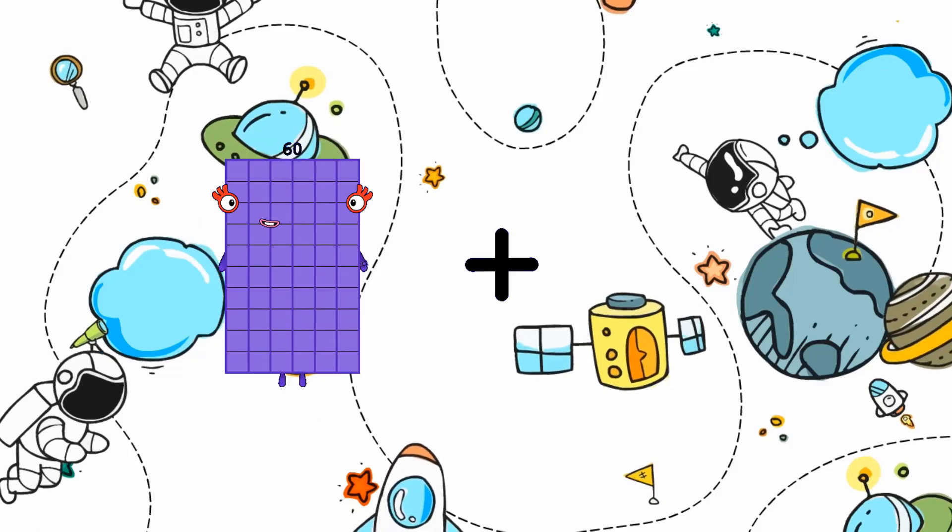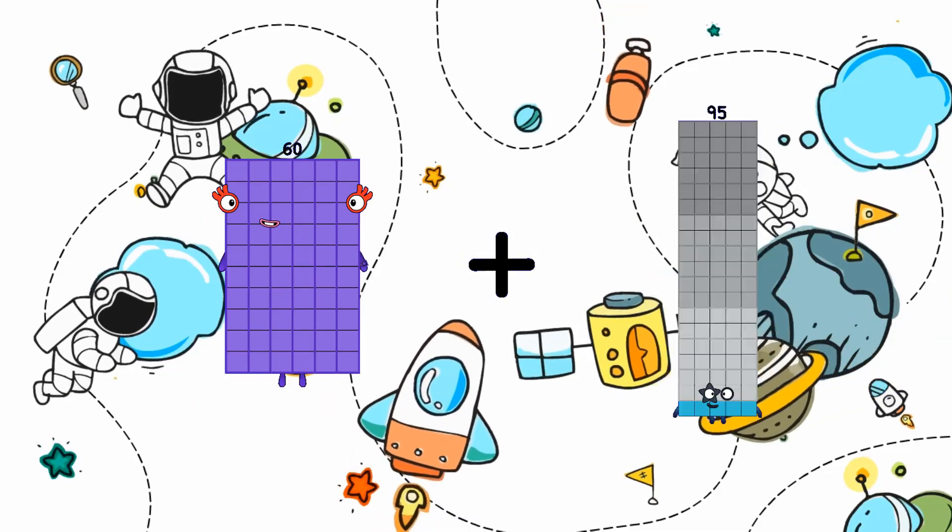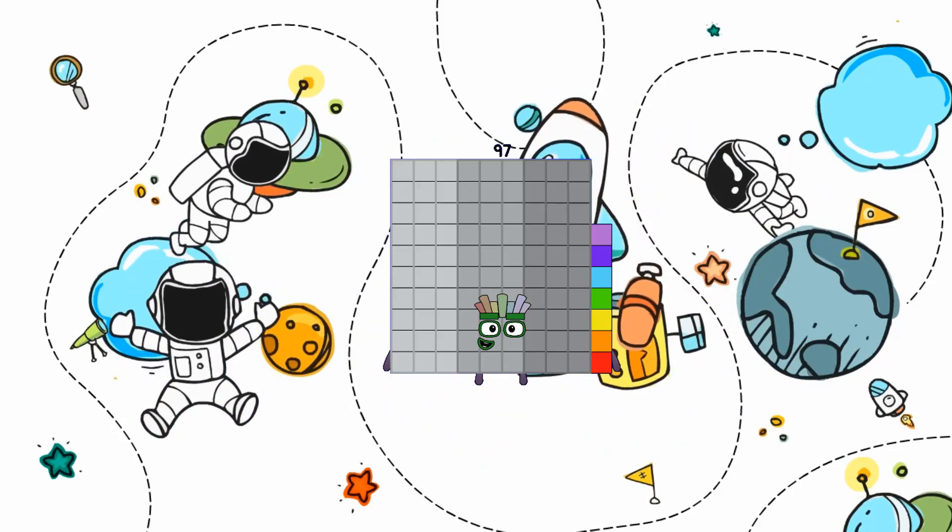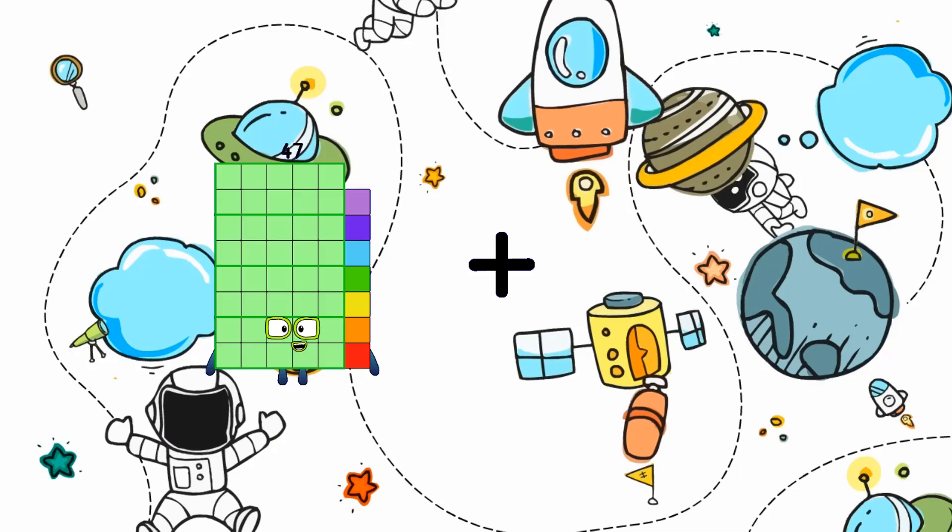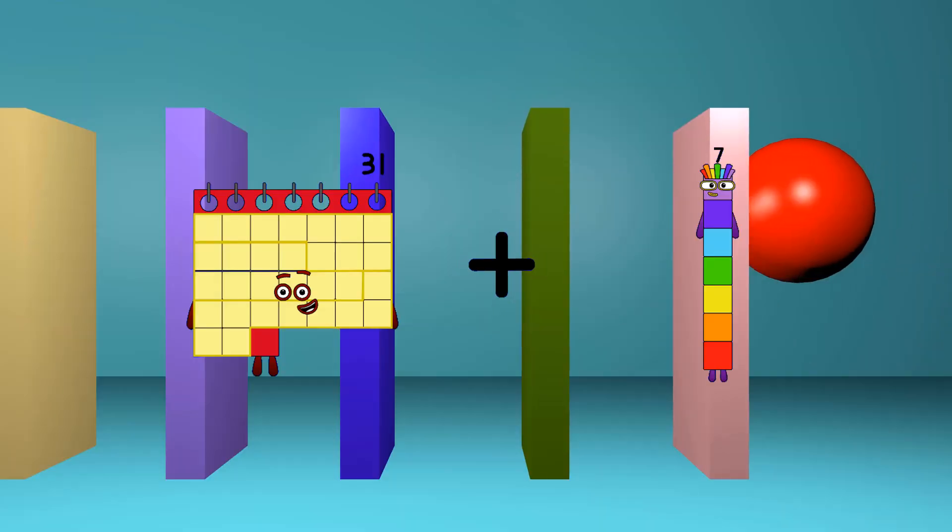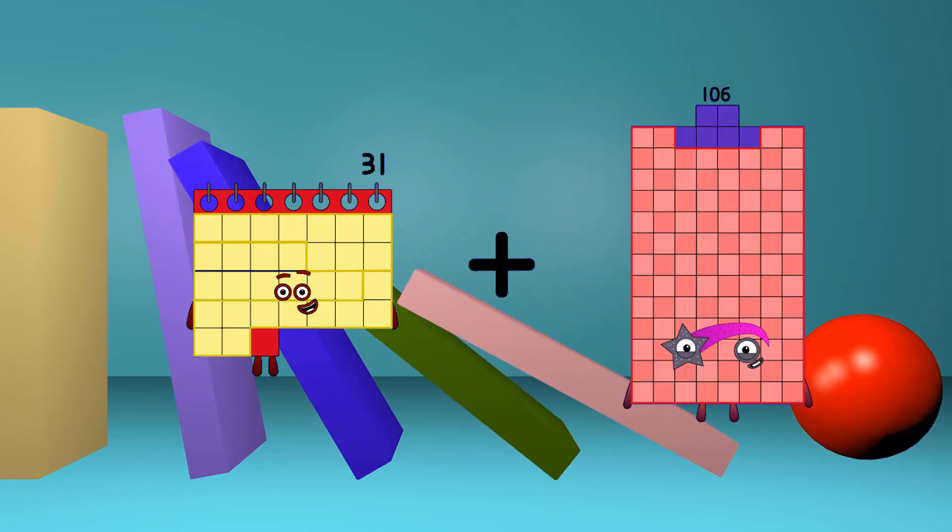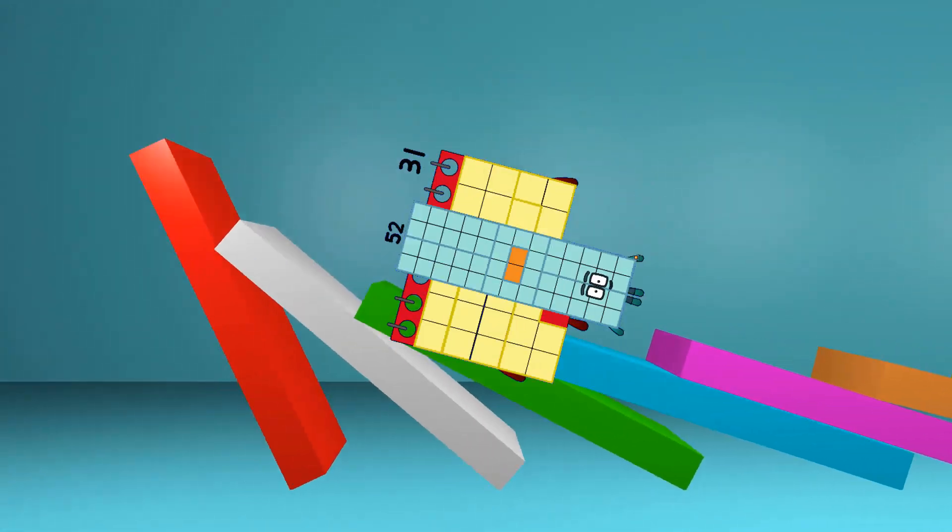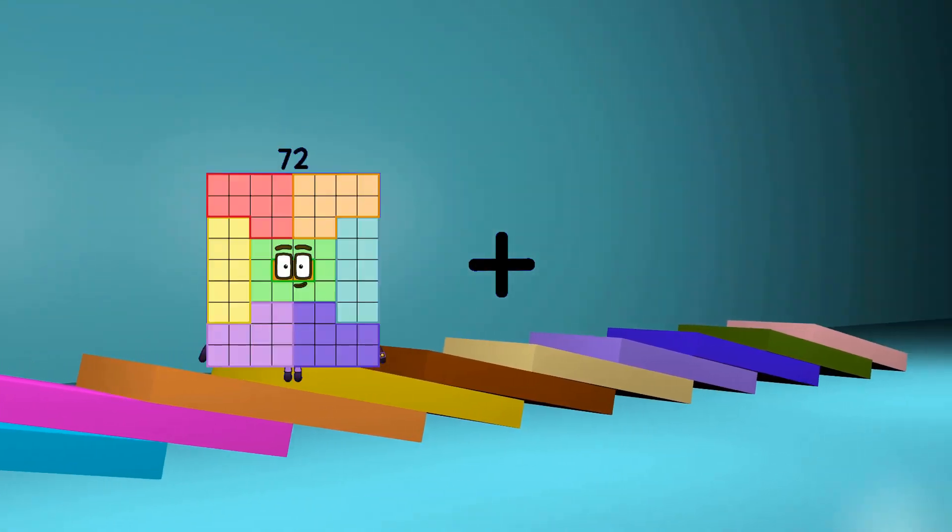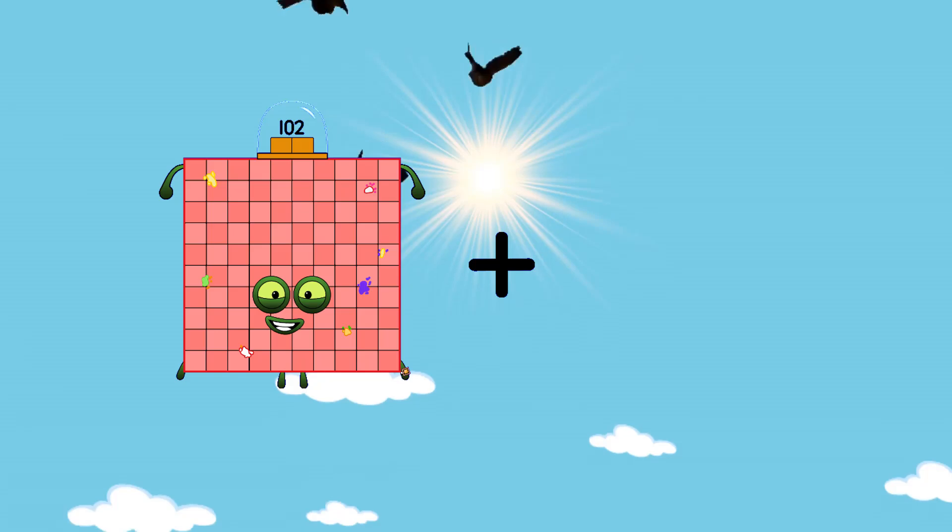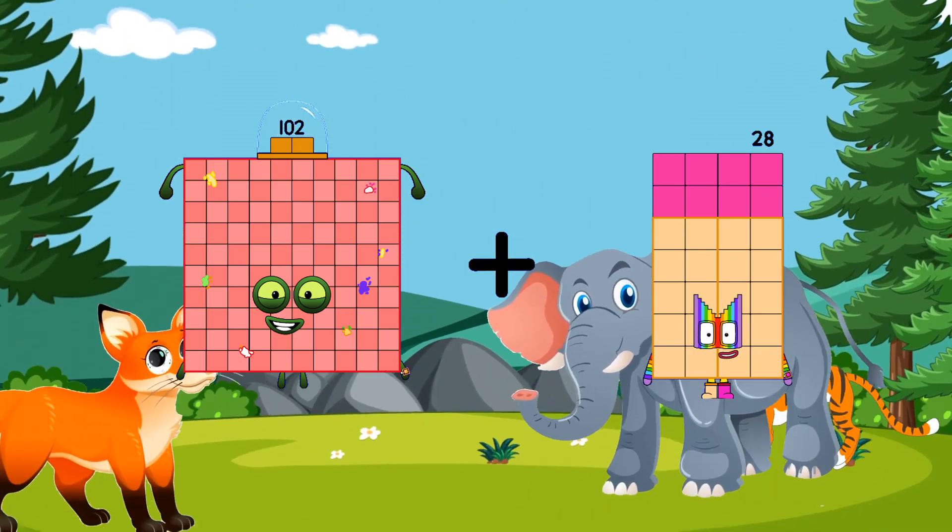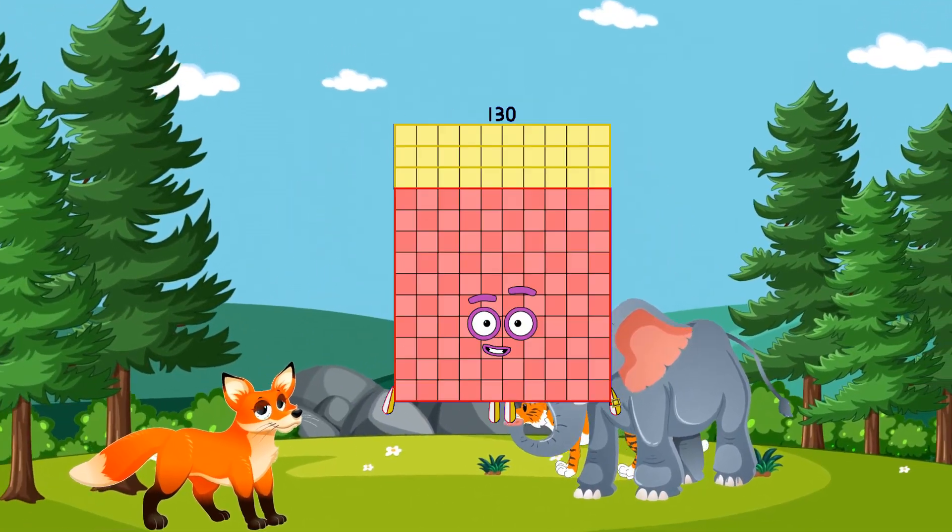60 plus 37 equals 97. 31 plus 52 equals 83. 102 plus 28 equals 130.